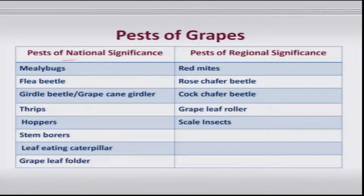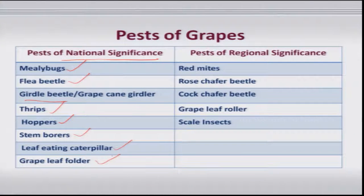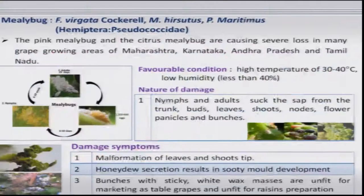In the pests of national significance, you generally get mealybugs, flea beetles, girdle beetles, some species of thrips, hoppers, stem borers, and to some extent leaf eating caterpillars and leaf folders. Whereas of regional significance, you get subspecies of mites, chaffers, leaf rollers, and scale insects.